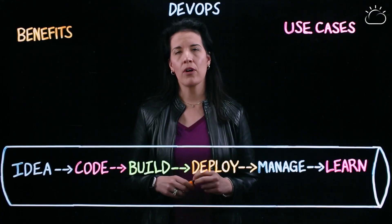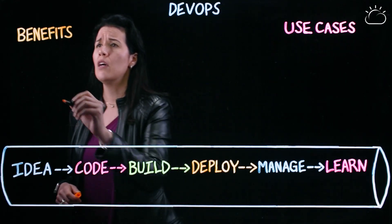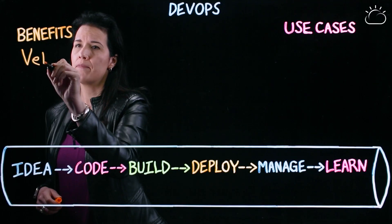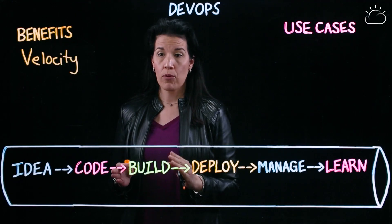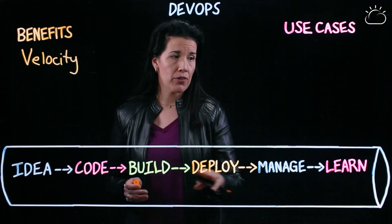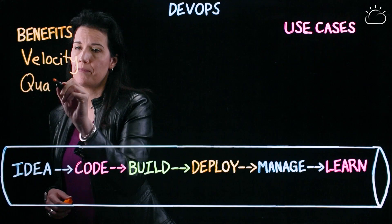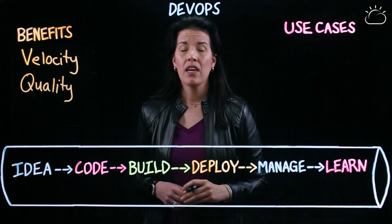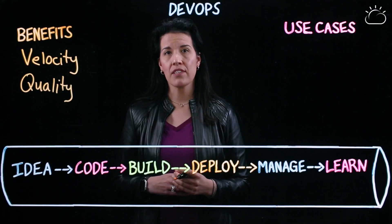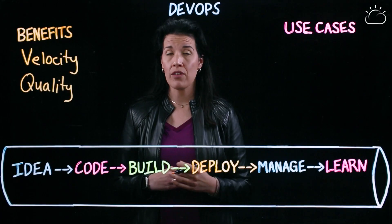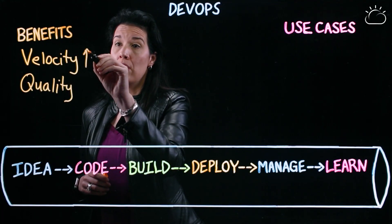DevOps transformation is an important part of our clients' transformation strategies in general, particularly because of two main benefits. One of those being velocity — how quickly products or applications can be piped through this release pipeline. The second benefit is quality. It's not enough just to be quick in terms of how fast applications are delivered; we must also be cognizant of the quality of what gets delivered on the other end of that pipeline. Digital reputations are at stake here. So quality and velocity both need to be balanced.